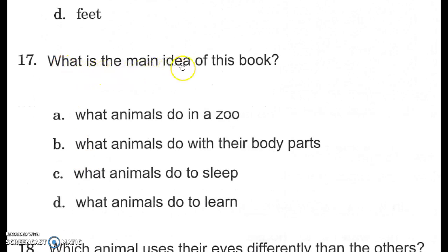What is the main idea of this book? A. What animals do in a zoo. B. What animals do with their body parts. C. What animals do to sleep. Or D. What animals do to learn.